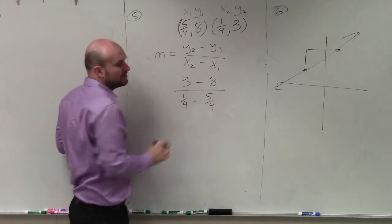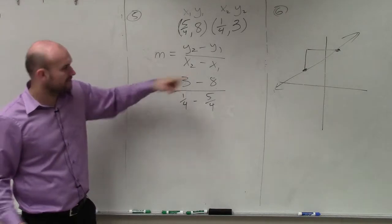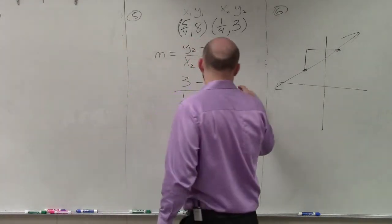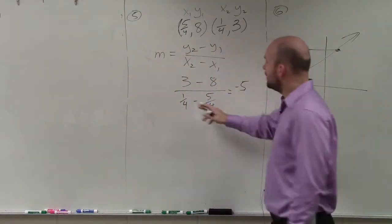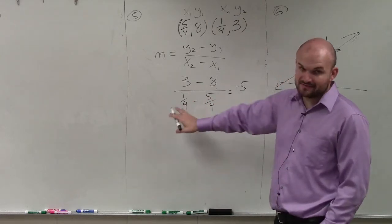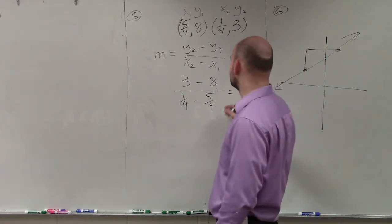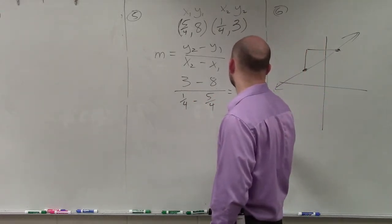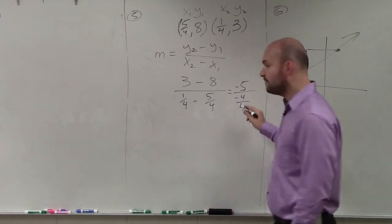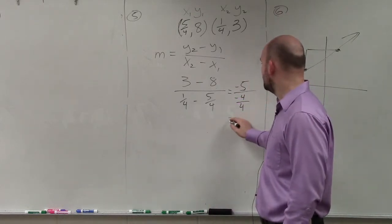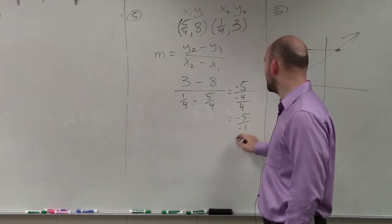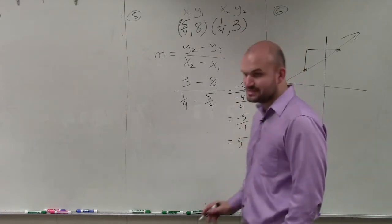But be very careful with the use of your parentheses. 3 minus 8 is going to be a negative 5. 1 fourth minus 5 fourths, they have the same denominator, so I can subtract them, is going to be a negative 4 fourths. Negative 4 fourths is just going to be negative 1. So it's negative 5 divided by negative 1, which equals positive 5.